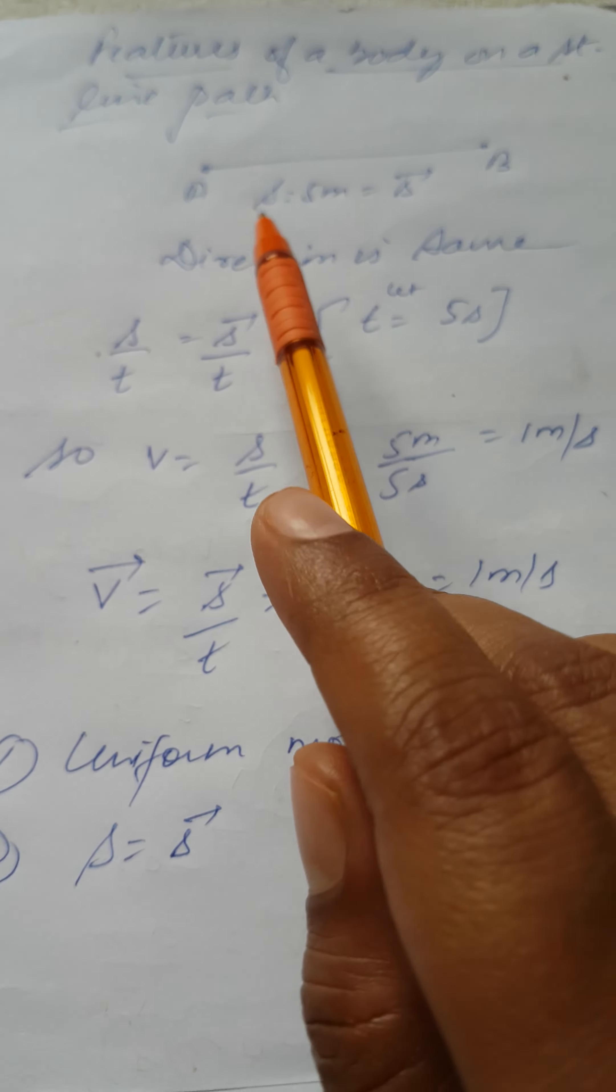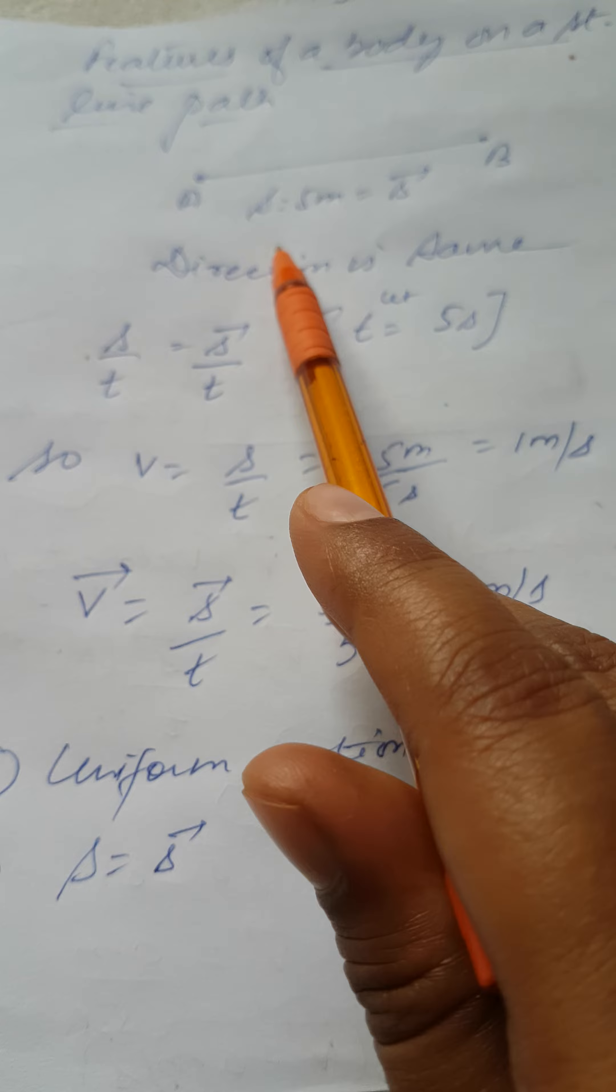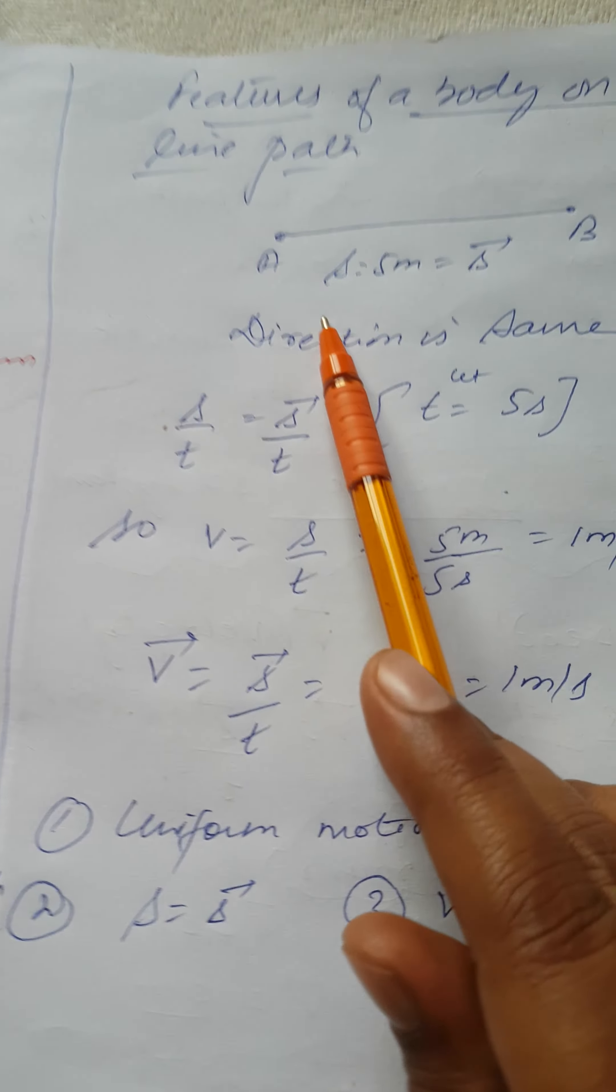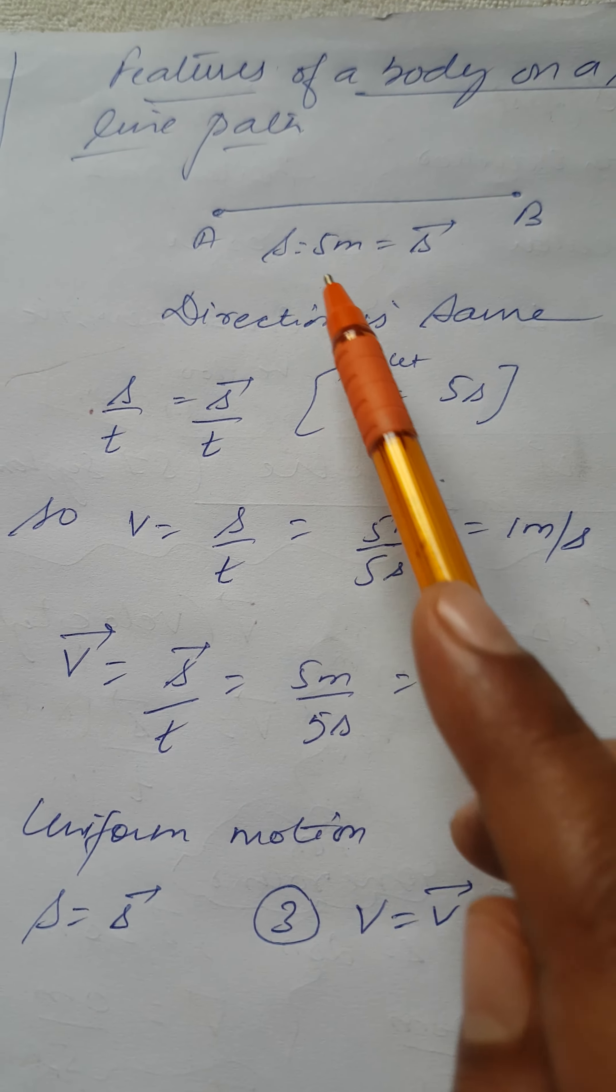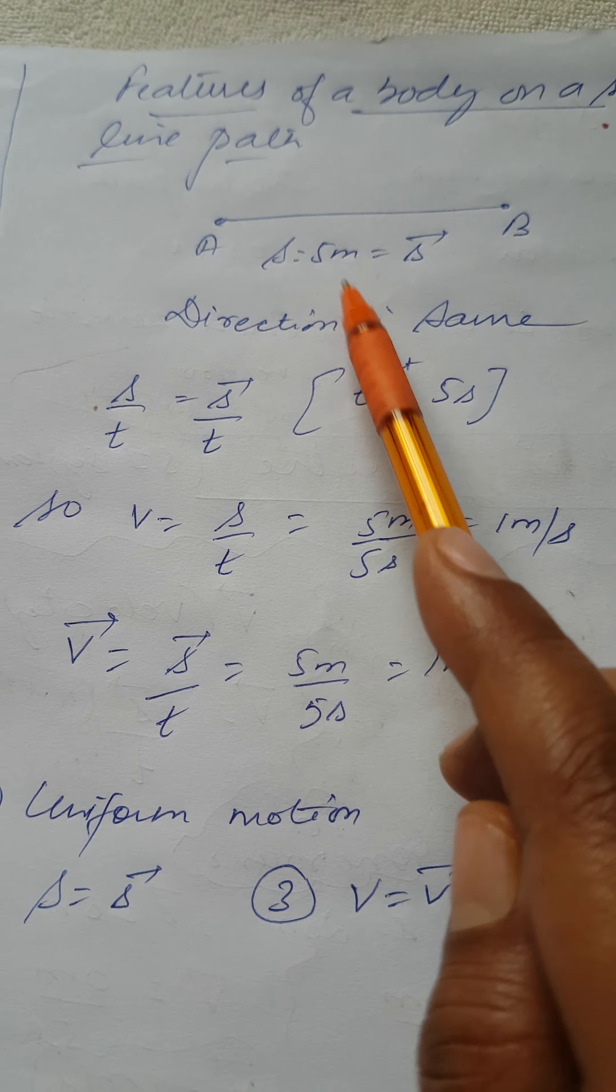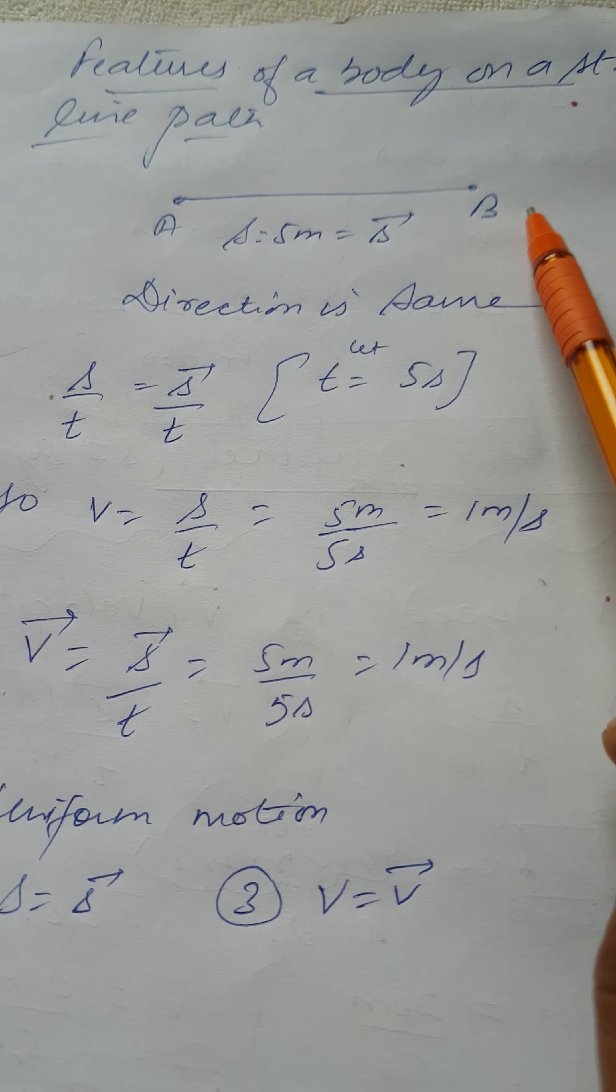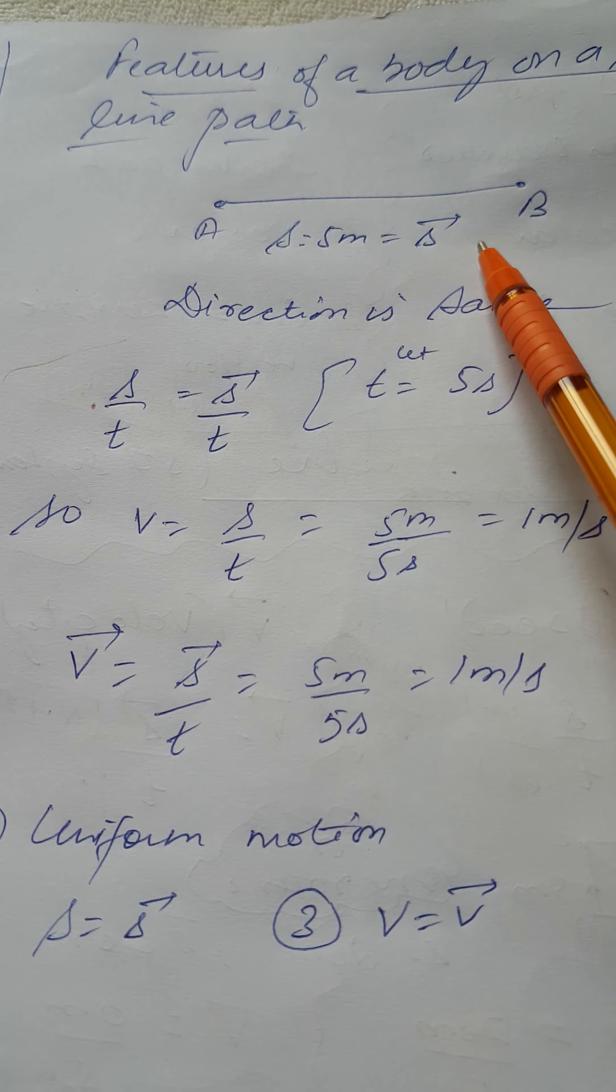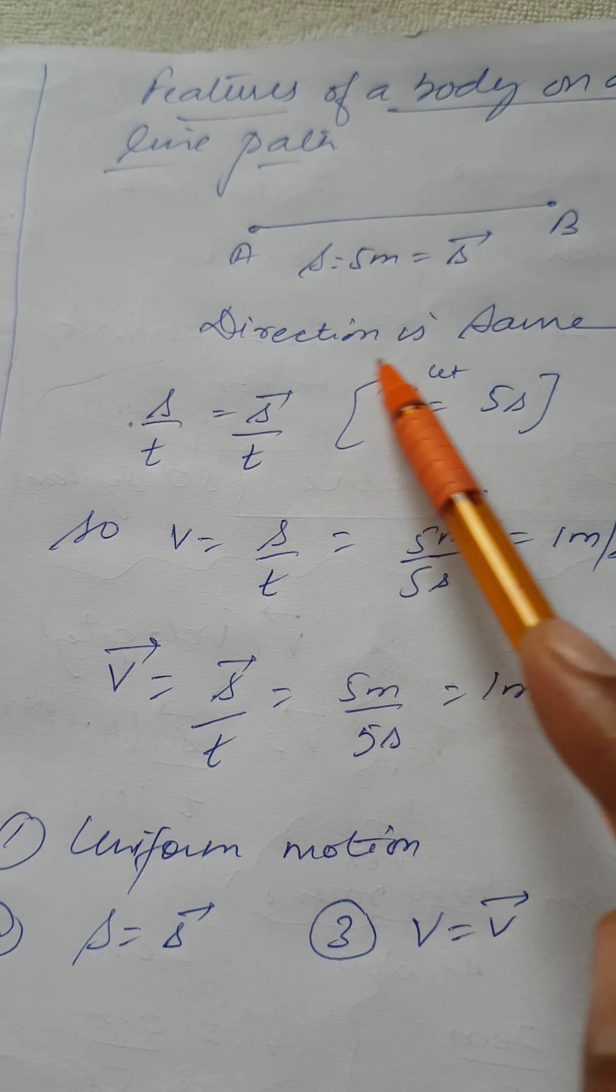Till now you have easily understood that if a body is moving on a straight line path, say A to B, let us take this distance to be 5 meters. On this straight line path, distance becomes equal to displacement. Why? Because direction remains same.